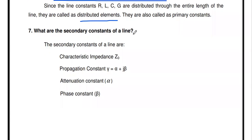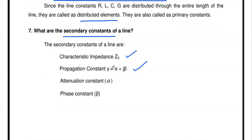What are the secondary constants of the transmission line? In addition to the primary constants, the secondary parameters are: characteristics impedance Z₀ and propagation constant γ (gamma). The propagation constant is expanded as α + jβ since it is a complex quantity. The real part α is the attenuation constant and the imaginary part β is the phase constant. Using these primary and secondary constants, we can analyze the transmission line.